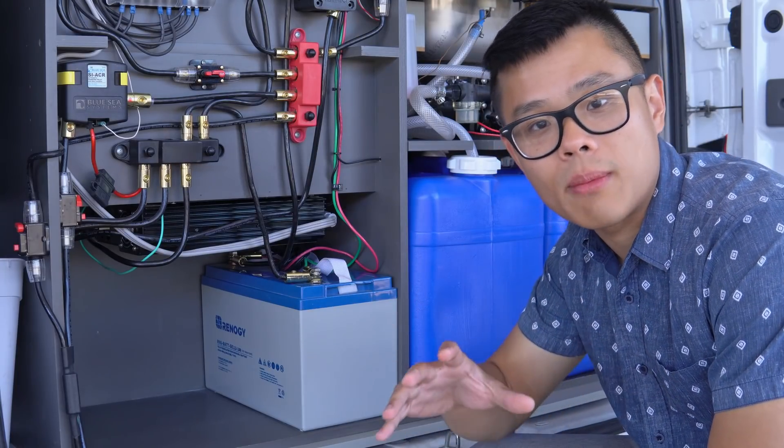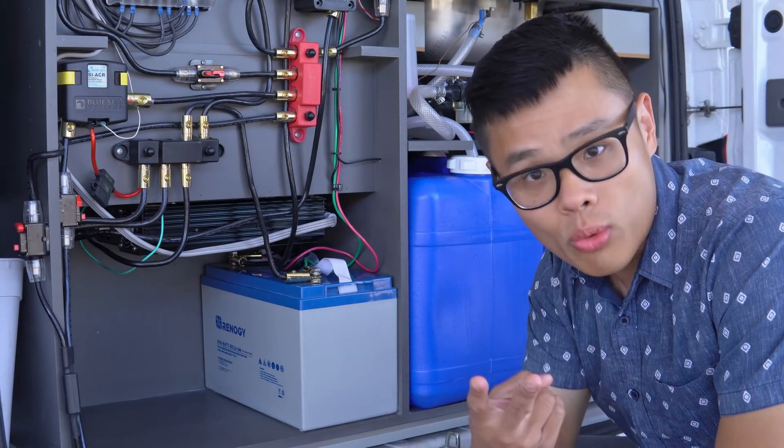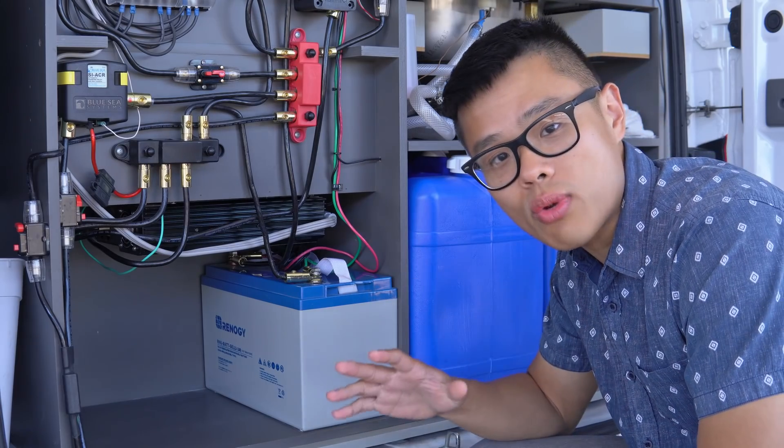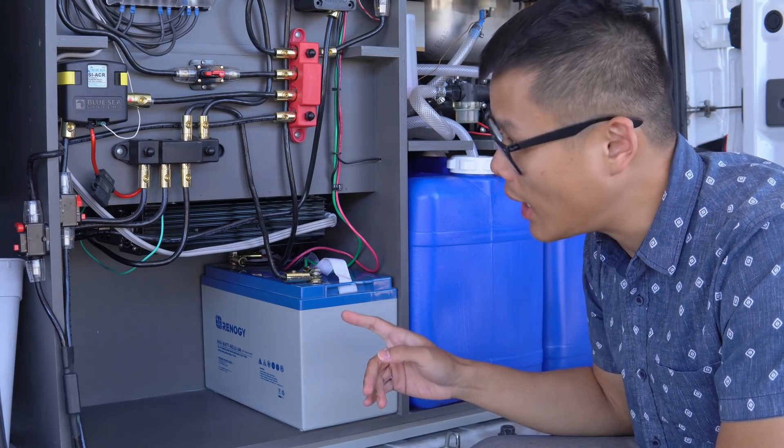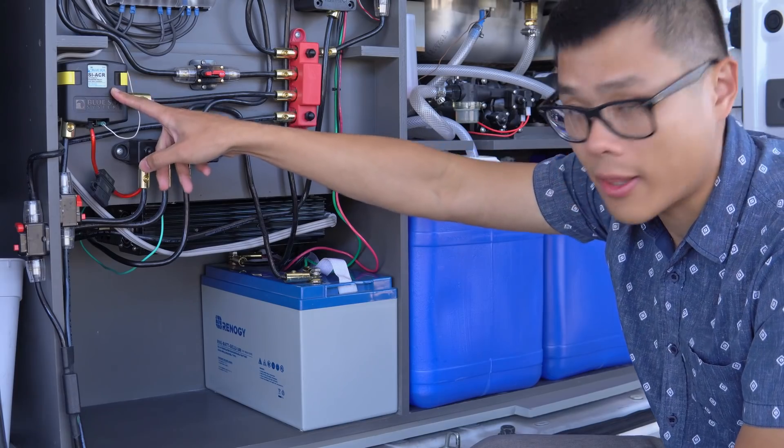That's why you need something in between your batteries. There's two methods to do this: either a charging relay or a DC to DC charger. On this van, I have a charging relay. That's the unit right there.